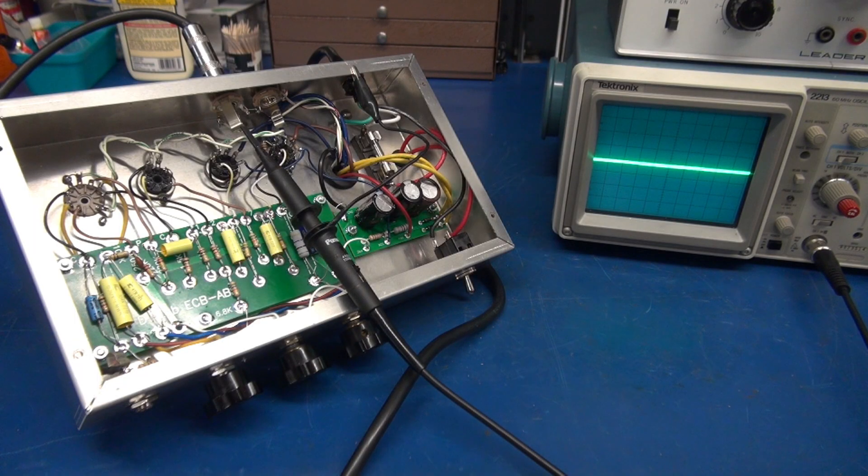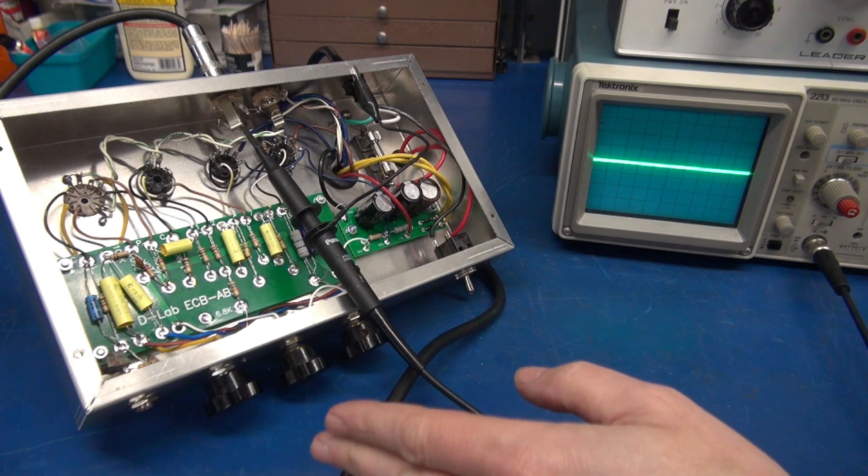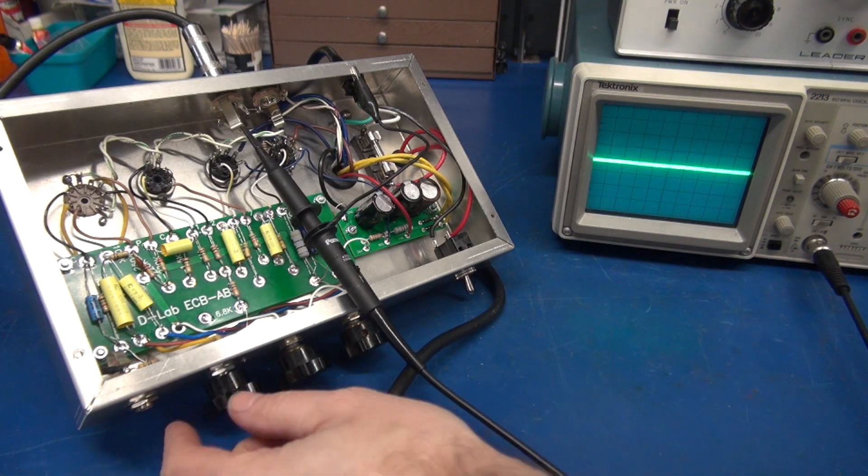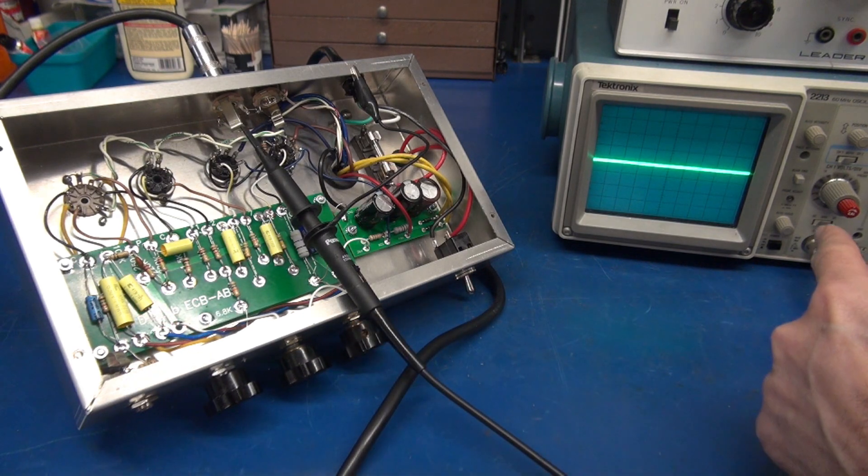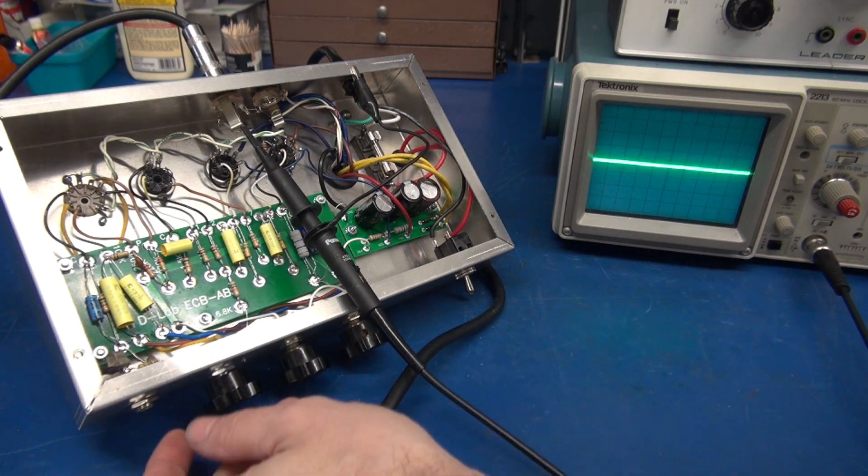All right, so we're going to check the noise floor of the new amp. So what I do is pretty much just bring the volume up full blast. No signal applied. We're monitoring with an oscilloscope at 50 millivolts per division. Here we go.